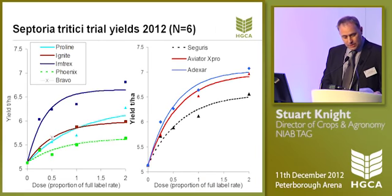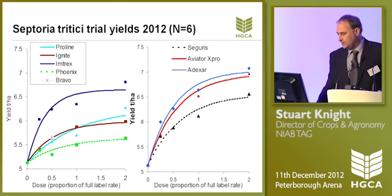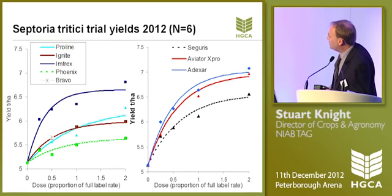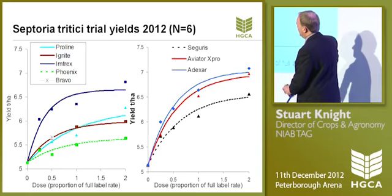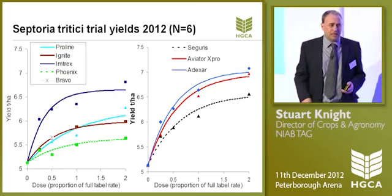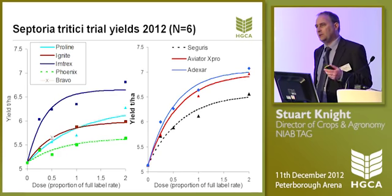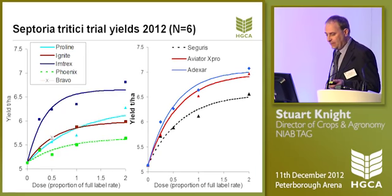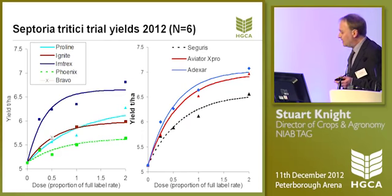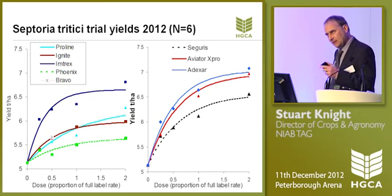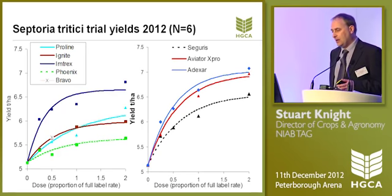We do take some of these trials to yield. Looking at the yields from the 2012 data series — the charts are now inverted, so higher lines are better. On the left-hand side, there's really no difference between the prothioconazole Proline and the epoxiconazole Ignite in terms of yield response — very similar lines. The Phoenix Folpet gives a useful yield response reflecting the level of septoria control we were getting. And once again, the Intrex straight fluxapyroxad, which gave better septoria control, also has that reflected through in yields.